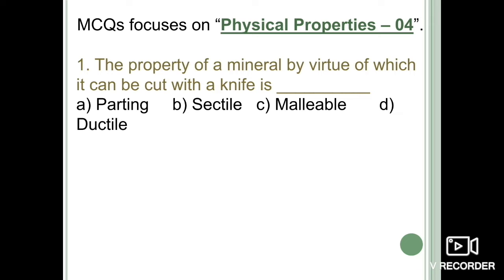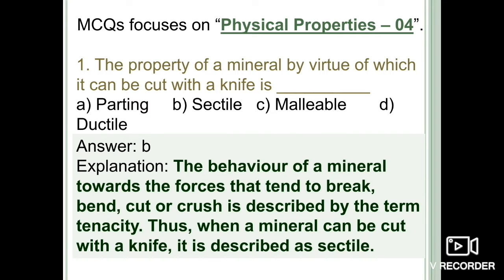The first question: the property of a mineral by virtue of which it can be cut with a knife is known as what — parting, sectile, malleable, or ductile? The behavior of a mineral towards forces that tend to break, bend, cut, or crush it is described by the term tenacity. When a mineral can be cut with a knife, that property is known as sectile. The correct option is option B: sectile.